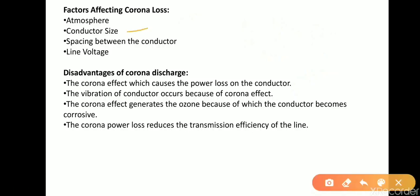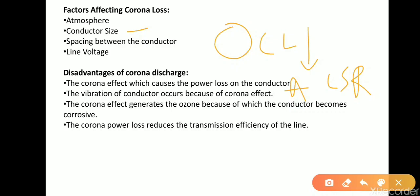Similarly, conductor size affects corona loss. If we have a solid conductor, the surface is smooth and corona loss decreases. But in a stranded conductor such as ACSR, the surface is uneven, so the breakdown voltage is reduced and corona loss increases.